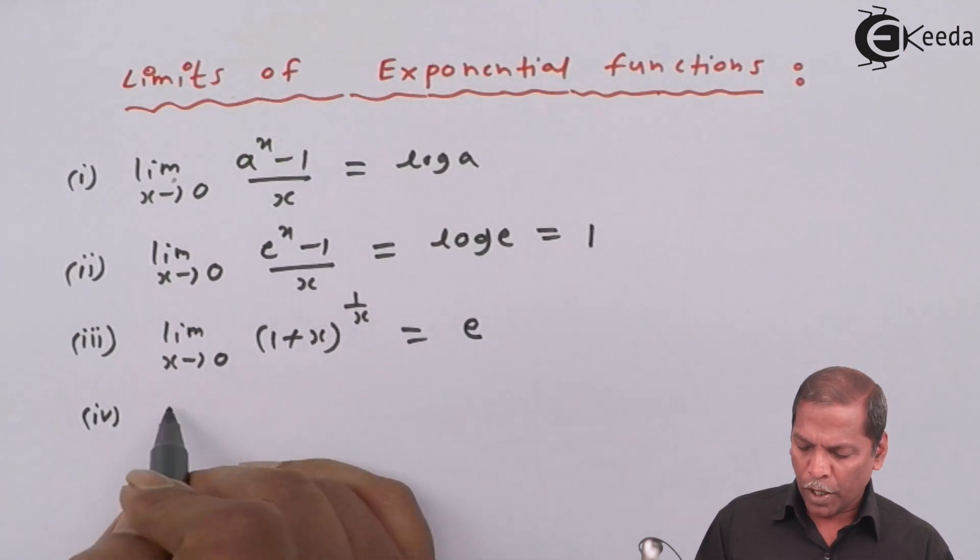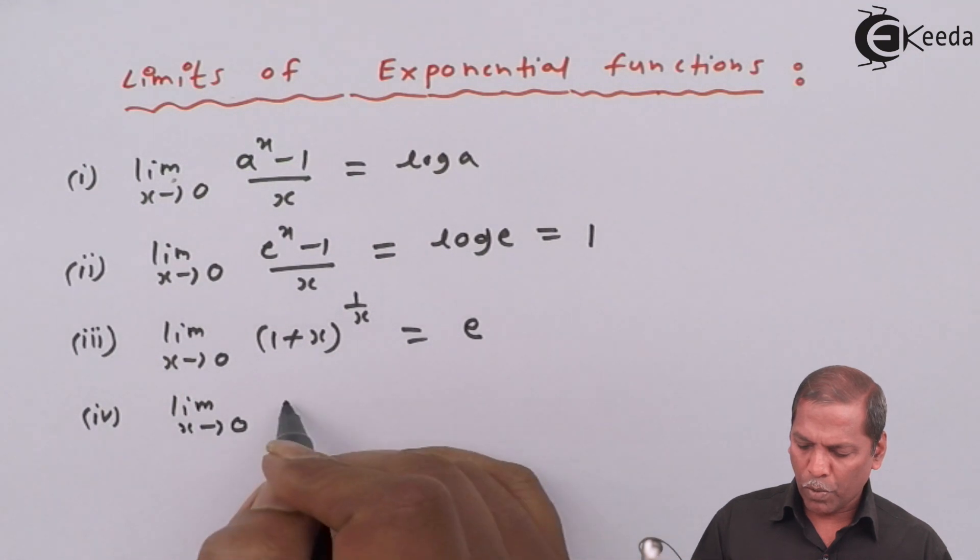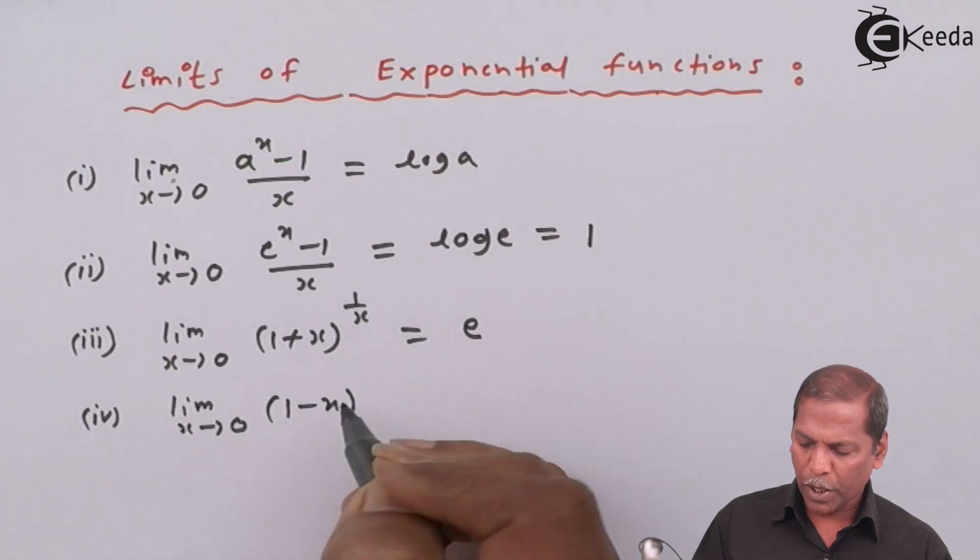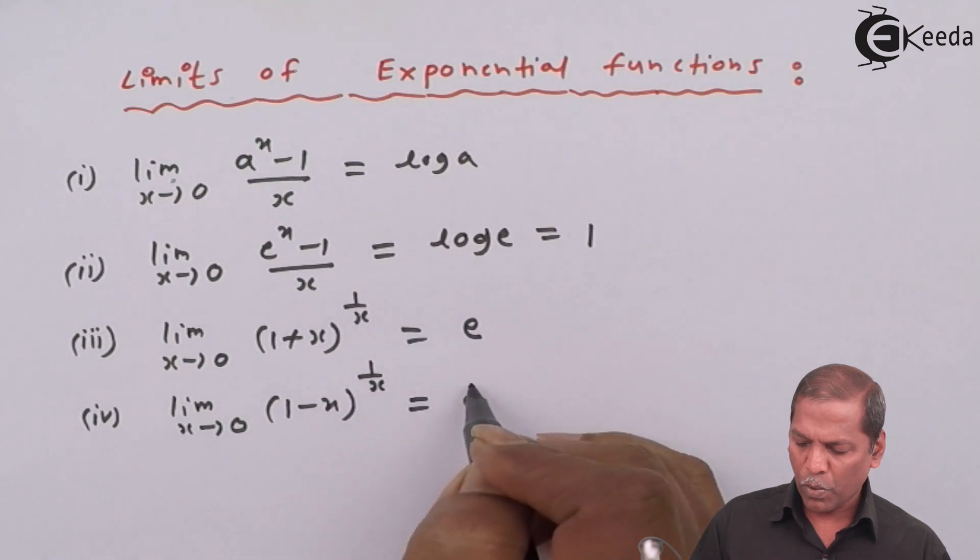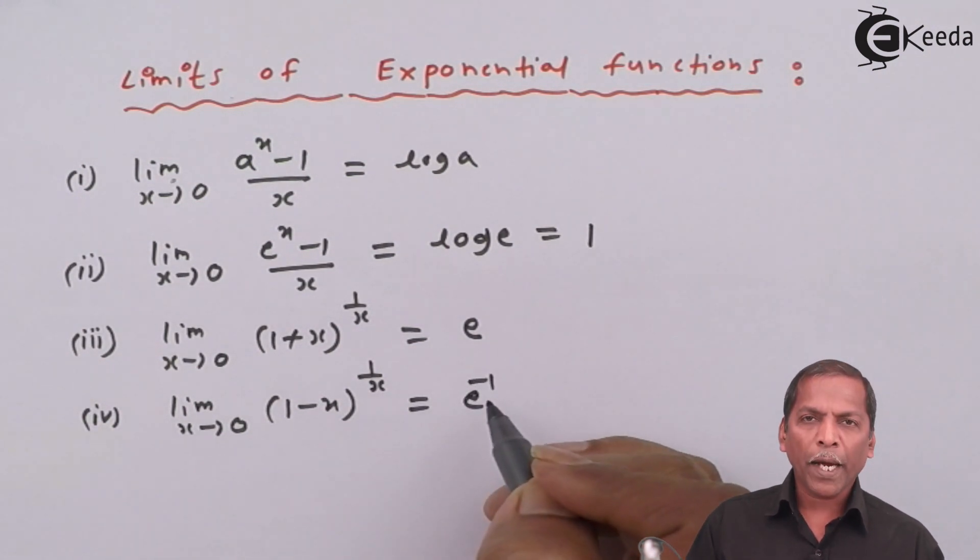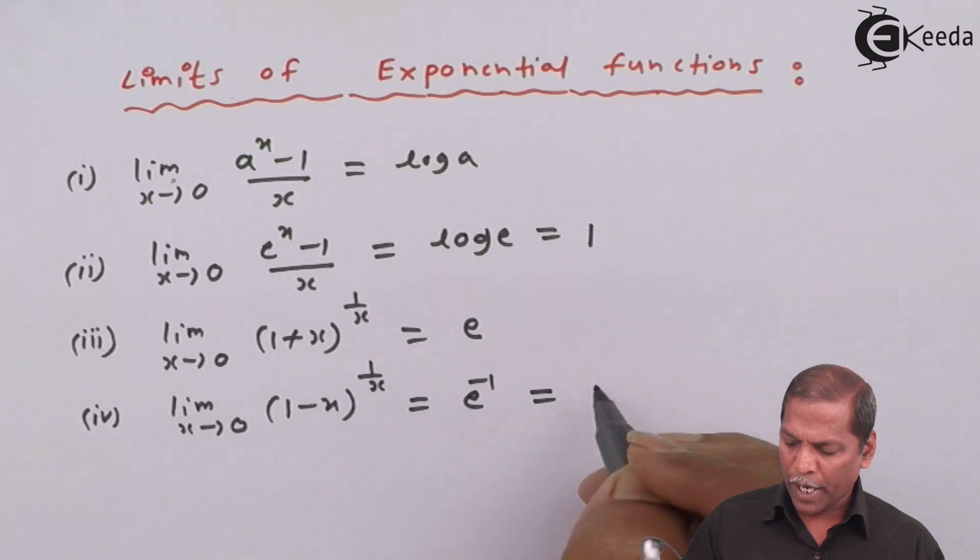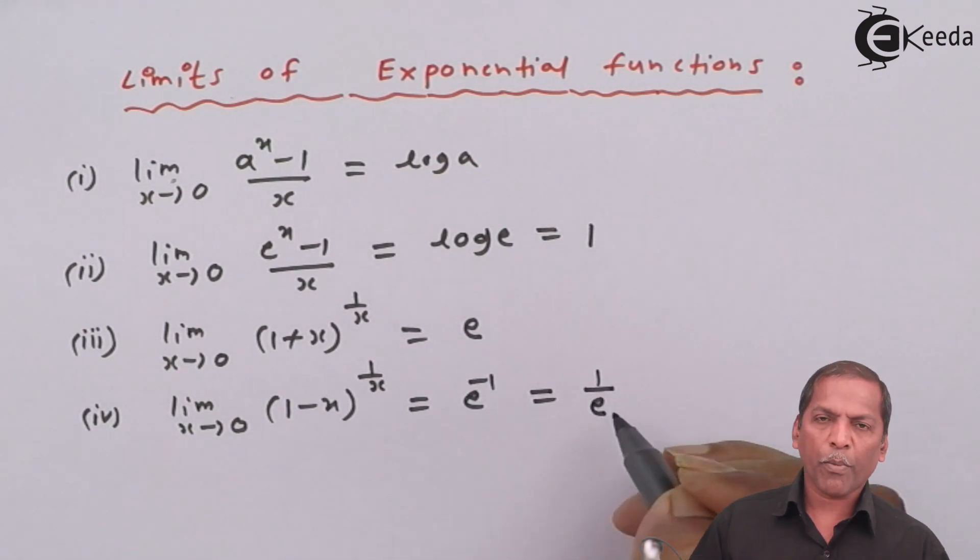Fourth formula is limit x tends to 0, 1 minus x raised to 1 by x, is equal to e raised to minus 1, and that can be written as 1 upon e.